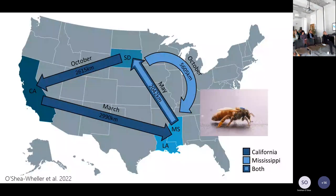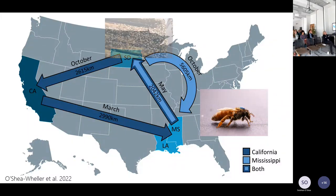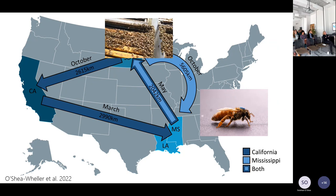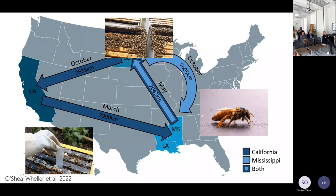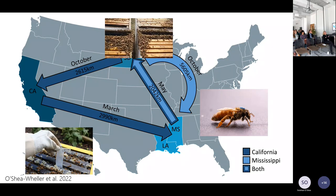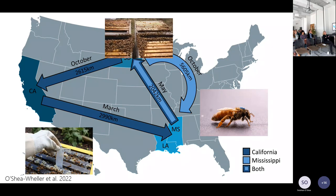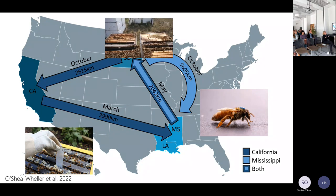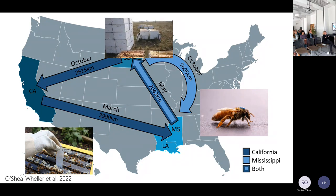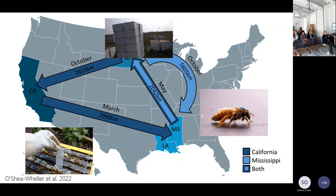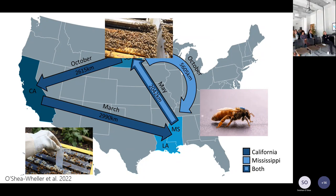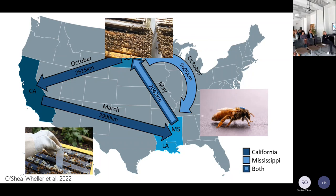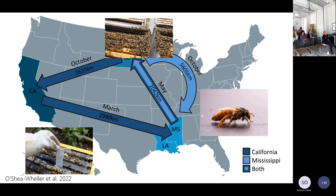The way it worked was we started setting things up in Louisiana and Mississippi, where we produced standardised colonies. We then shipped those up to South Dakota for honey production — a big honey producing region — and then down to California for almond pollination after the winter, which is one of the largest sources of pollination revenue. The important part was that we gave all colonies a normalised treatment at the beginning to remove Varroa, and then left them to their own devices without applying miticides.